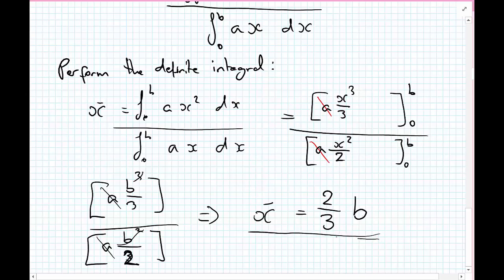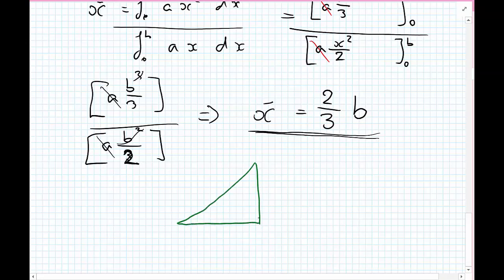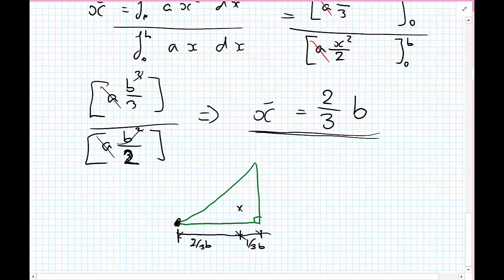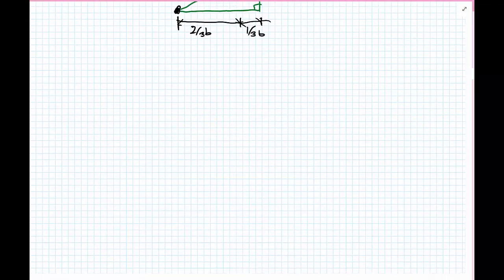Now, you might think I've made a mistake, because I mentioned it's one third. Let's remind ourselves how we've done the integral. Our triangle was drawn like this, and the distance we just calculated has been from this corner of the triangle here. So this is two thirds of b from that corner. The well-known one third of b is actually measured from where the right angle of the triangle is. So we have the x-coordinate of the centroid of our triangle. We're now going to move along to calculating the y-coordinate of our triangle.